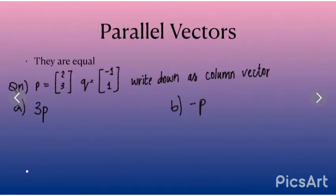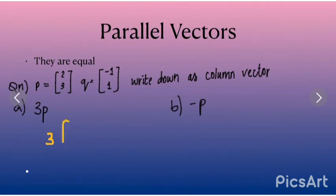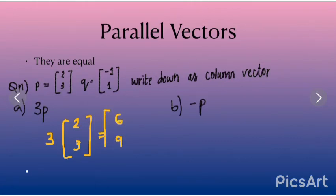Now parallel vectors are always equal. So here's a question: p is equal to (2, 3) and q is equal to (-1, 1). We need to write down as a column vector 3p. So for that, we keep 3 and we know that p is equal to (2, 3). So we just multiply: 3 into 2 is 6, and 3 into 3 is 9. So that's it.